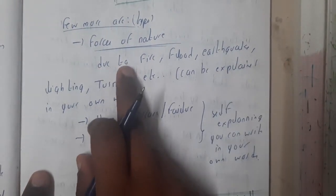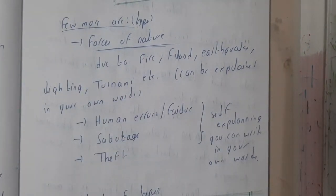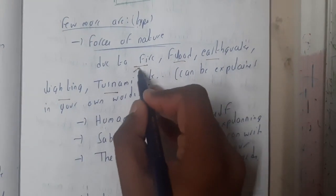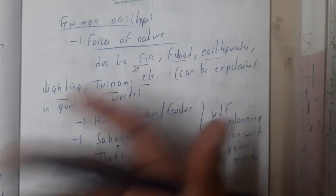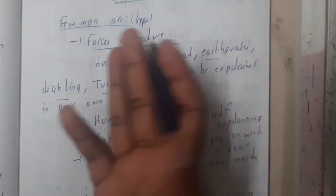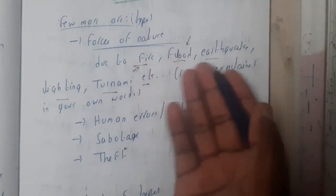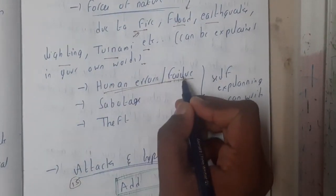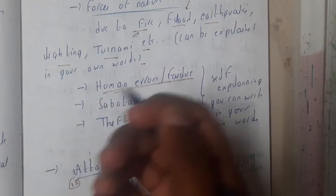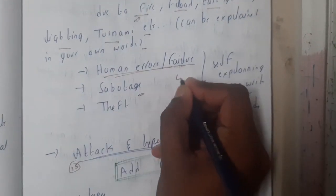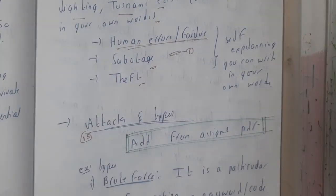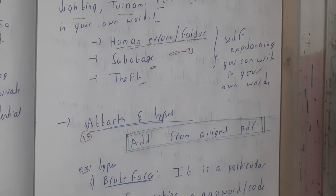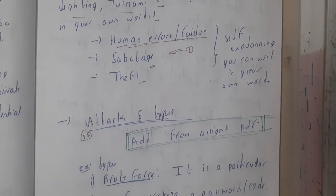There are additional types of threats as well. Force of nature threats include fire accidents, floods, earthquakes, lightning, and tsunamis — events that can burn or physically damage your system. Human failure refers to mistakes like wrong connections. Sabotage means someone deliberately damages your system, and theft means your system is physically lost. In the next lecture, we will discuss attacks and their types.